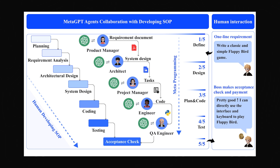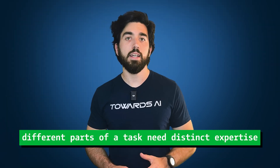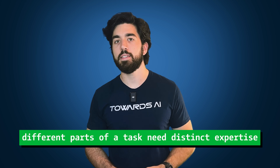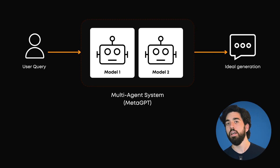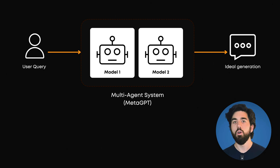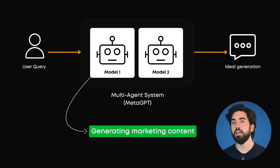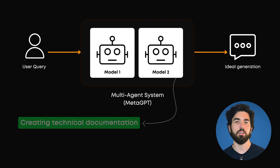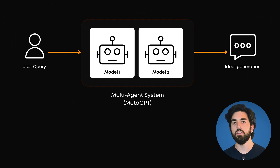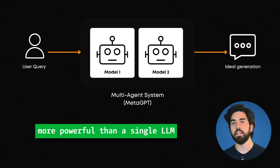MetaGPT, on the other hand, is like having a team of GPTs that specialize in different areas and can interact to solve more complex tasks collaboratively through formatted outputs. MetaGPT is ideal when different parts of a task need distinct expertise. For example, if you are managing a product launch, MetaGPT agents can split responsibilities: one agent can generate marketing content, while another focuses on technical documentation. This kind of cooperative agent structure makes agentic systems significantly more powerful than a single LLM can. And here's how we can easily do one ourselves.